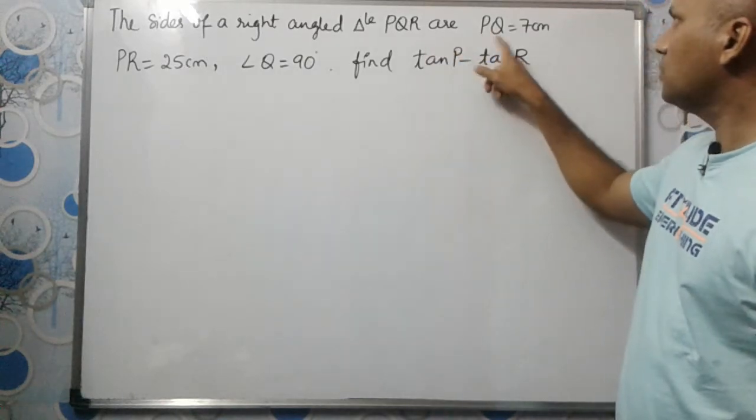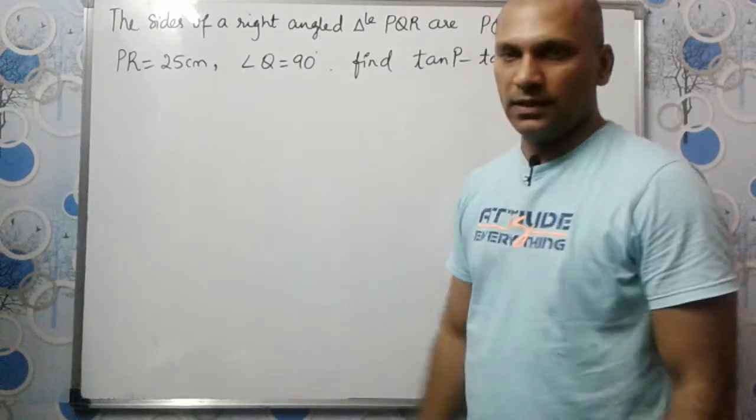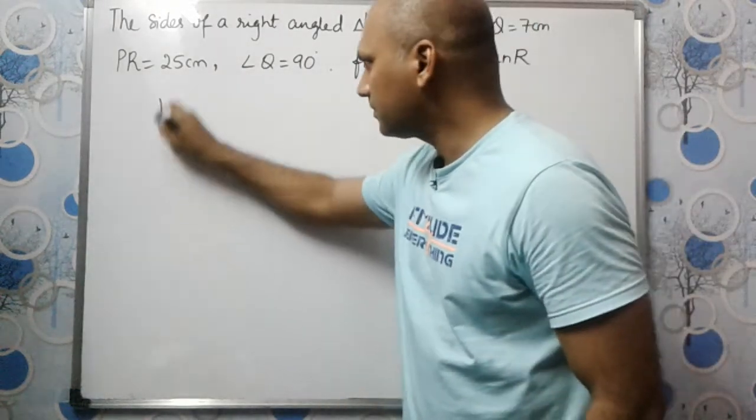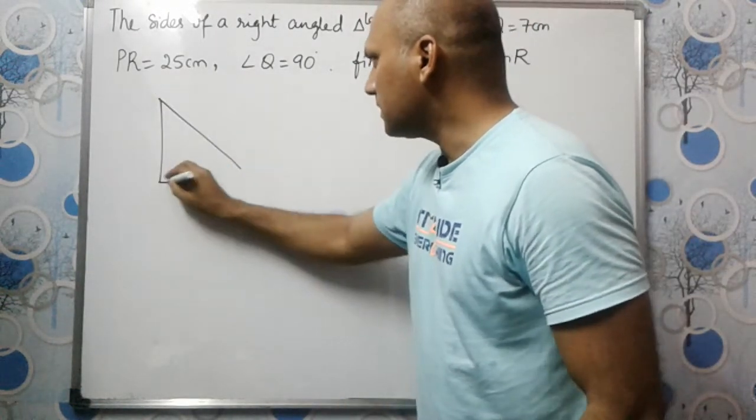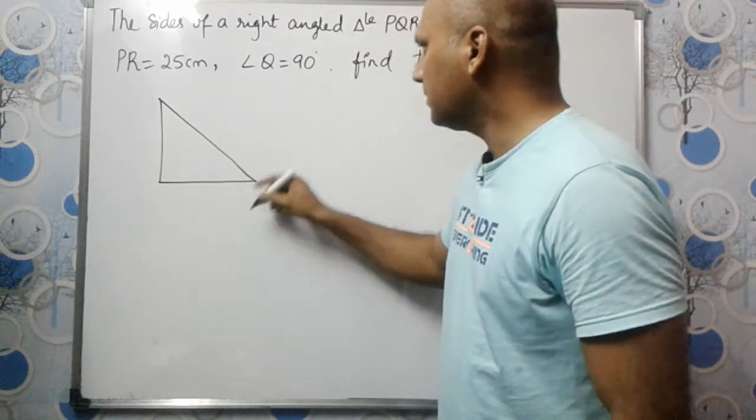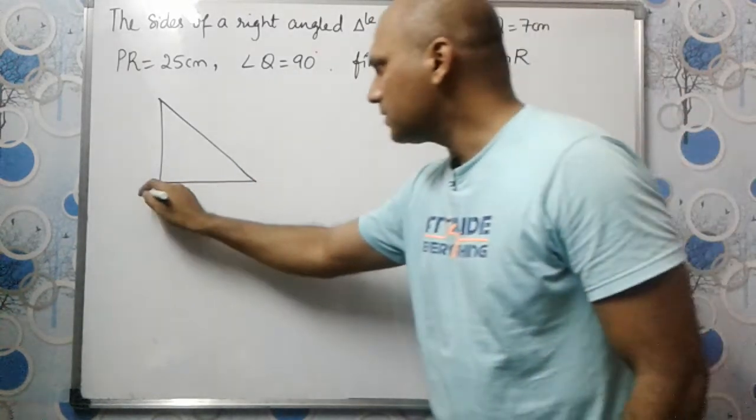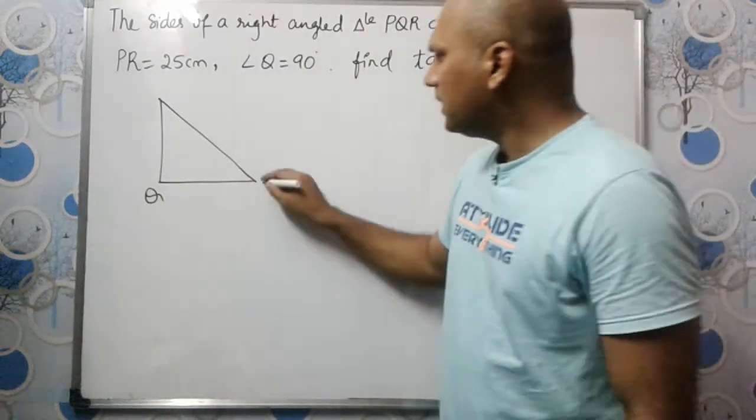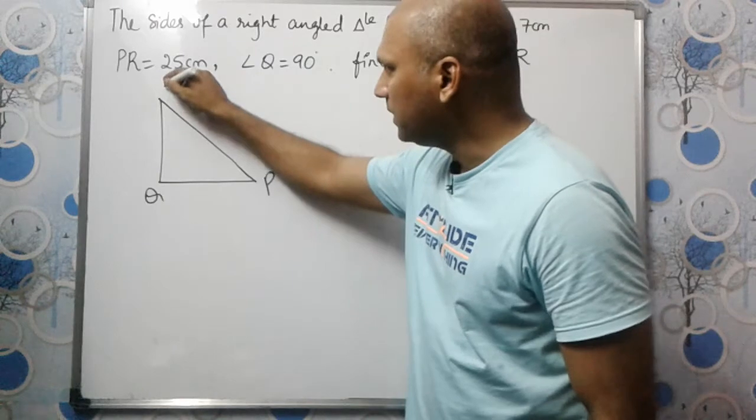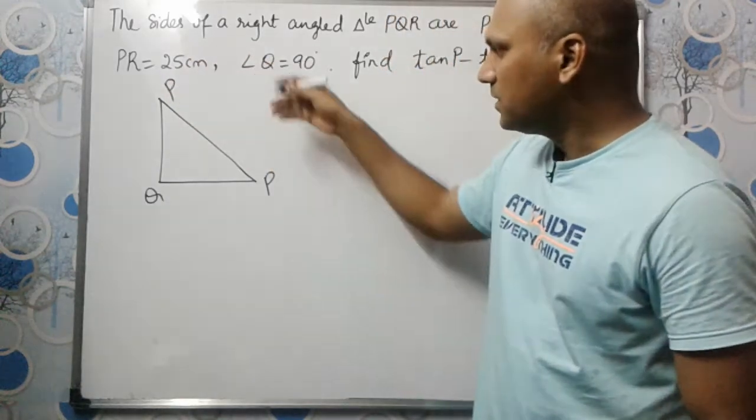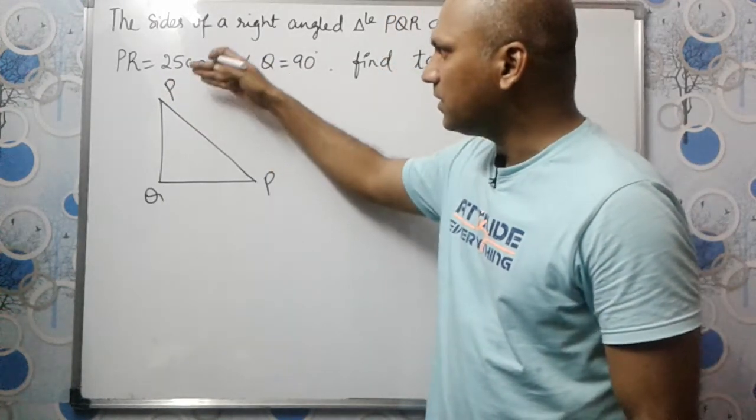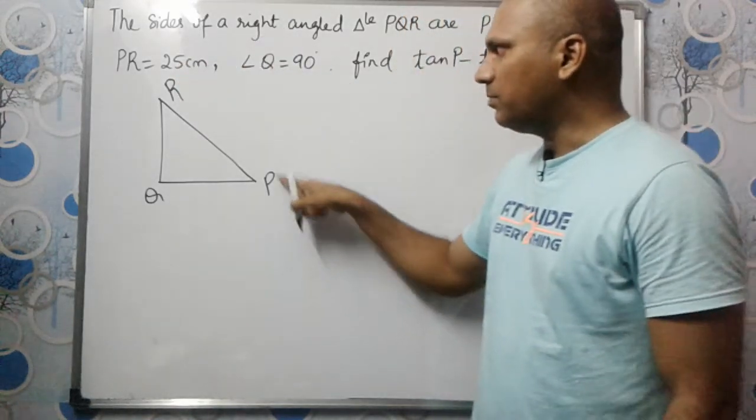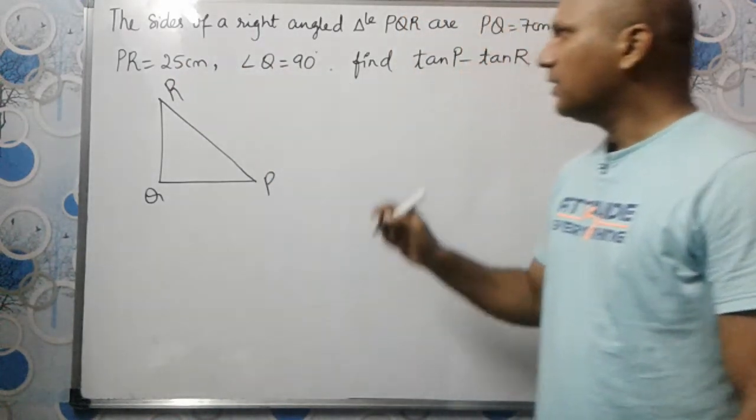What is given to us? Two sides and one angle. So let us draw a right-angled triangle. Angle Q is 90 degrees, so this is Q. We can take P here or R here. We are going to take it like this: P and R.